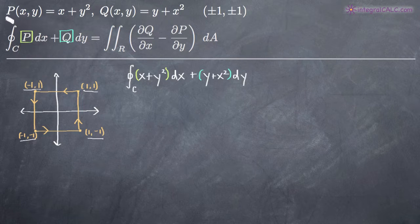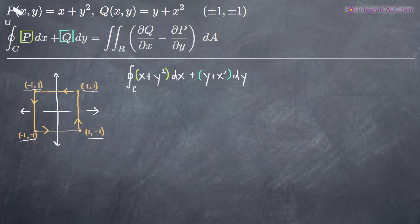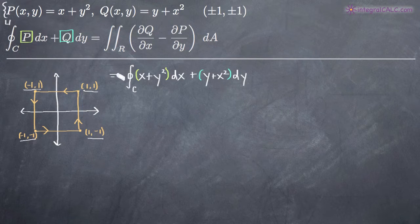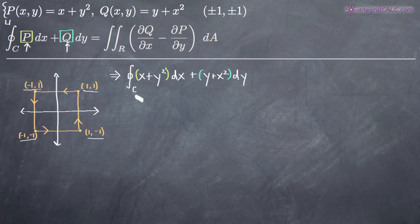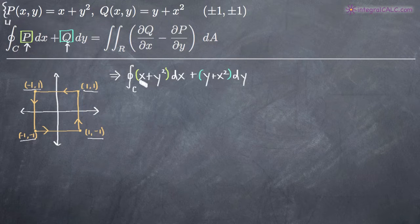This is Green's theorem, which allows us to convert the line integral to a double integral, which can be a lot easier to evaluate. Depending on the kind of problem, you may be given your problem in terms of P(x,y) and Q(x,y), which is what we have here. Green's theorem tells us that P is what we have before dx and Q is what we have before dy, so we can pull out P and Q and see our two functions.